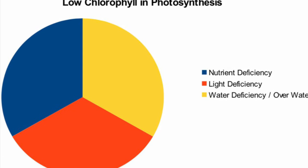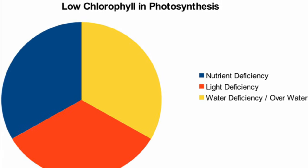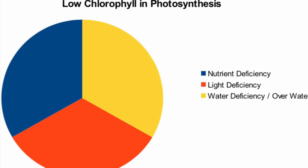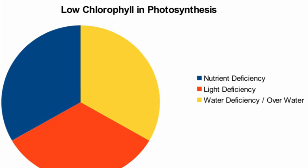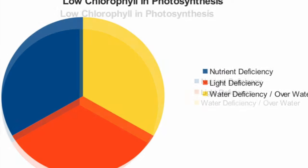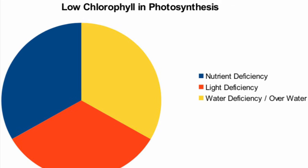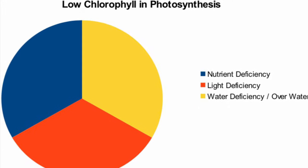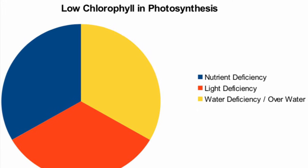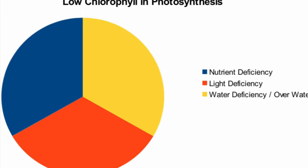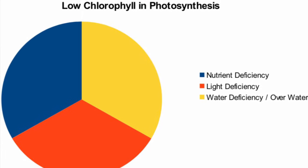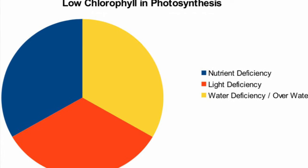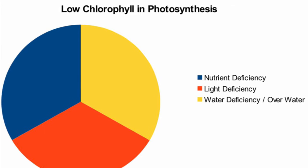What causes a decrease in chlorophyll? The first cause is a lack of nutrients such as nitrogen, zinc, iron, and magnesium in photosynthesis. The second reason is that the light is not enough. The third reason is water is not enough, or too much water leads to rotten roots.